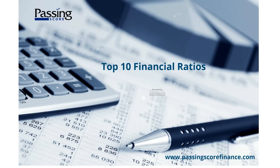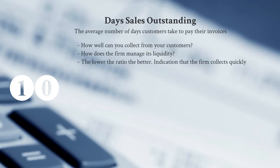Let's start with number 10: Days Sales Outstanding. This is the average number of days it takes our customers to pay us back for our accounts receivable — for those invoices that we've sent them. This answers the question of how well we collect from our customers and how well we're managing our liquidity. The lower the ratio, the better.